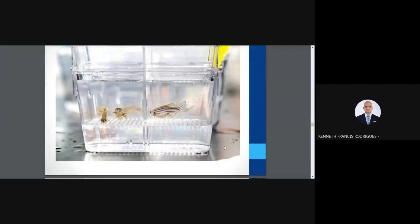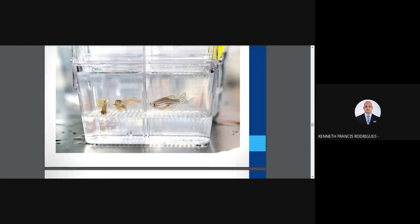This is a view of the breeding tank. The tank contains a separator for the fish. The fish breed and eggs fall below the net and are collected in the lower cavity. That is basically what happens during the breeding experiment.